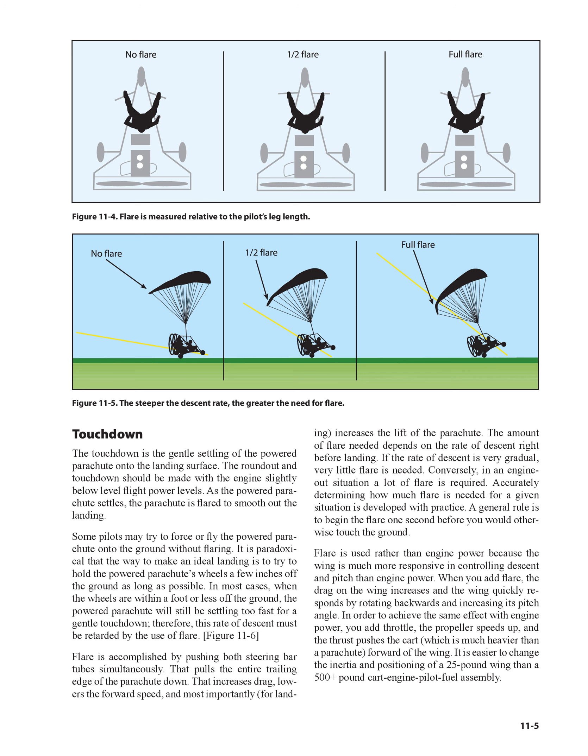Figure 11-6: Flare is accomplished by pushing both steering bar tubes simultaneously, pulling the entire trailing edge of the parachute down. That increases drag, lowers forward speed, and most importantly for landing, increases the lift of the parachute. The amount of flare needed depends on the rate of descent right before landing. If the rate of descent is very gradual, very little flare is needed. Conversely, in an engine-out situation, a lot of flare is required. Accurately determining how much flare is needed for a given situation is developed with practice.